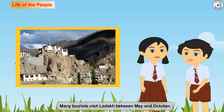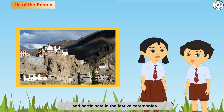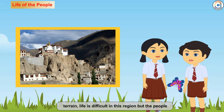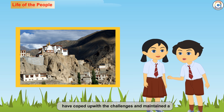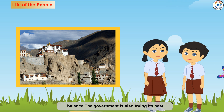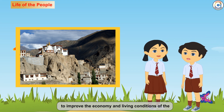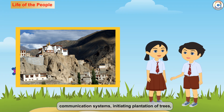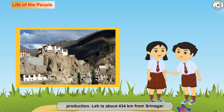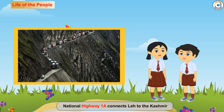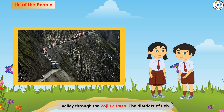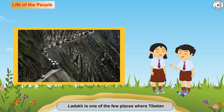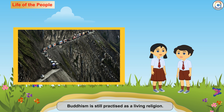Many tourists visit Ladakh between May and October and participate in the festive ceremonies. They also visit the gompas and trek to see the meadows and glaciers. Due to inhospitable climate and terrain, life is difficult in this region, but the people have coped with the challenges and maintained a balance in nature. The government is also trying its best to improve the economy and living conditions of the inhabitants by constructing transport and communication systems, initiating plantation of trees, improving local breeds, and increasing fodder production. Leh is about 434 kilometres from Srinagar. National Highway 1A connects Leh to the Kashmir Valley through the Zoji La Pass. The districts of Leh and Kargil are well connected through airways. Ladakh is one of the few places where Tibetan Buddhism is still practised as a living religion.